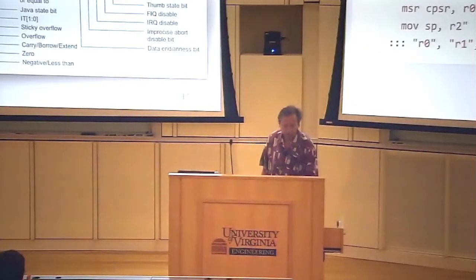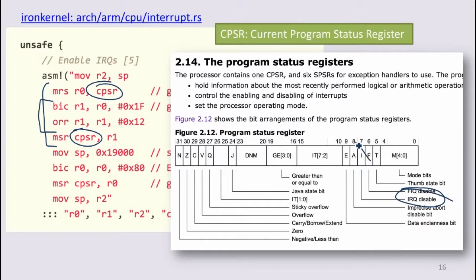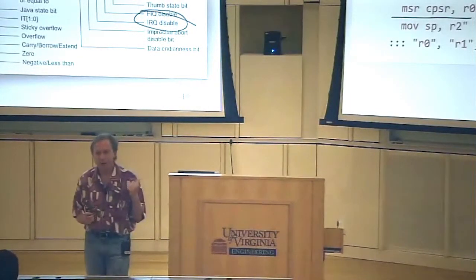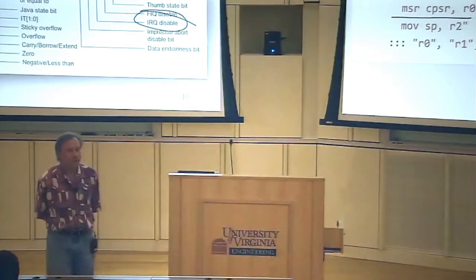But it's also necessary to be able to change what's in the interrupt table. The CPSR is a special register that keeps track of the program status. One of the properties of the program status is whether interrupts are enabled or not. This code is changing the values of those bits to be zeros, and when we're done, it's restoring them to be whatever they were.